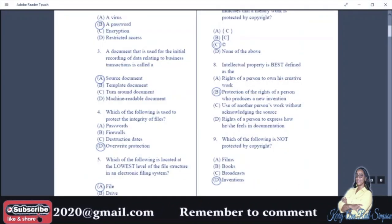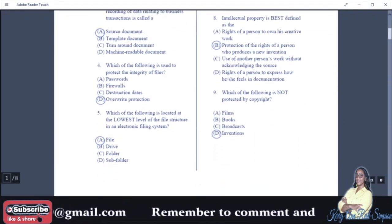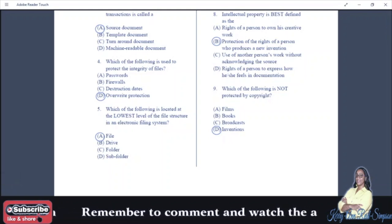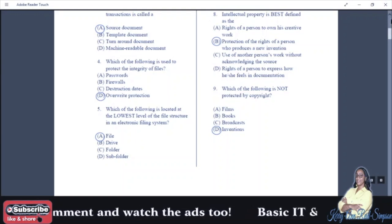Number five: which of the following is located at the lowest level of the file structure in an electronic filing system? Your answer is file. File would be at the bottom of that list.